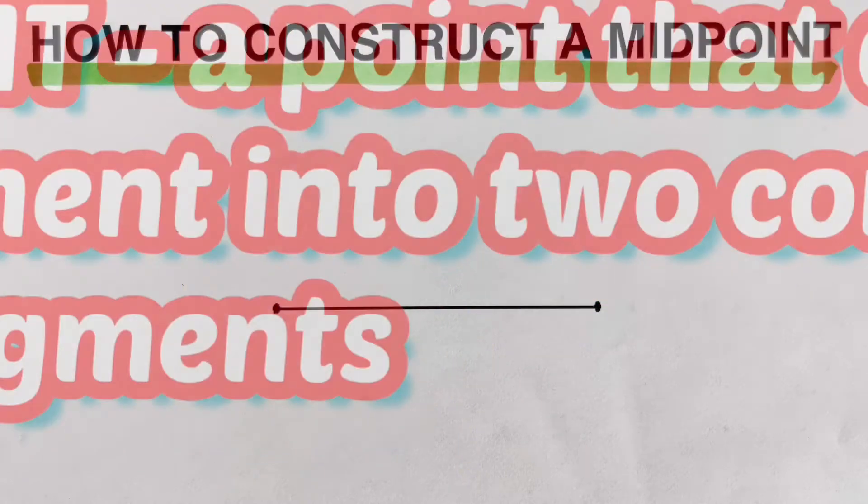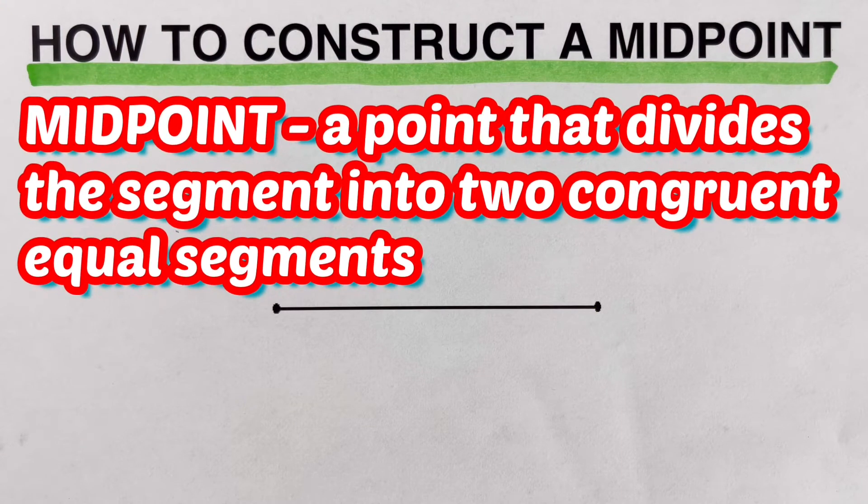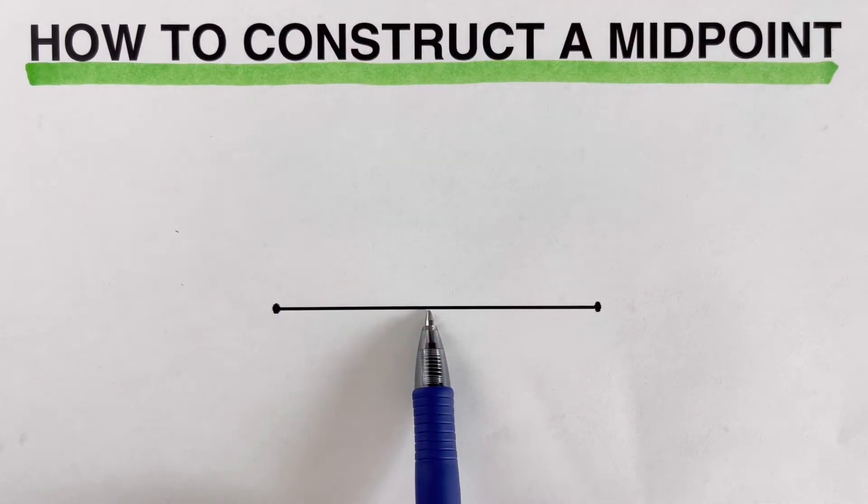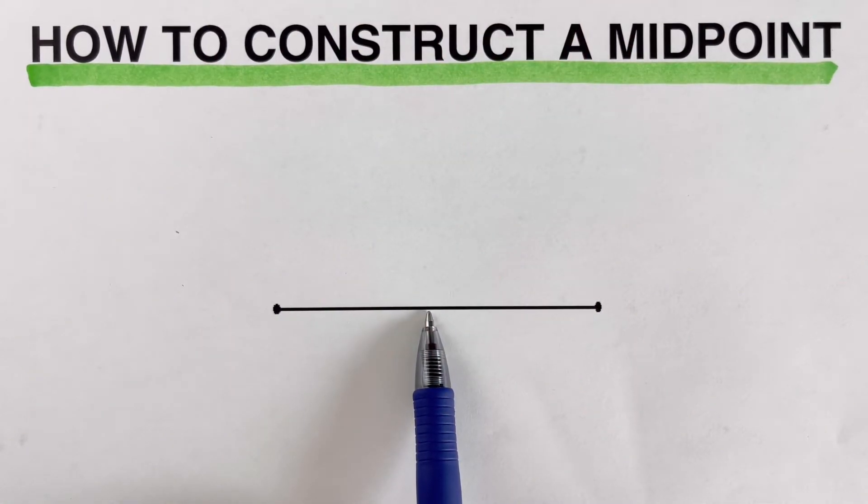By definition, a midpoint is a point that divides the line segment into two congruent or equal segments. So this means that we are supposed to create another segment which should be located in the middle and that is the midpoint.